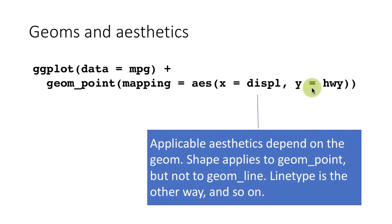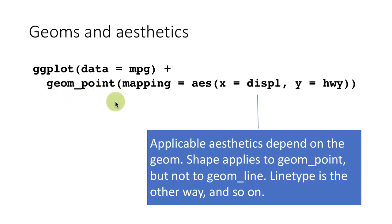There are many different kinds of aesthetics available. We have seen the x-aesthetic, the y-aesthetic, and in the previous lecture we also saw color and line type. Not all aesthetics are applicable to all geoms — the applicable aesthetics depend upon the kind of geom you are using. For example, x and y are applicable aesthetics for geom_point, because to plot a point you need to mention both the x and y coordinates.